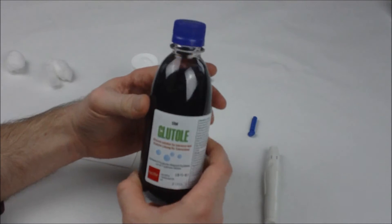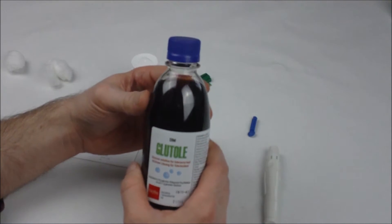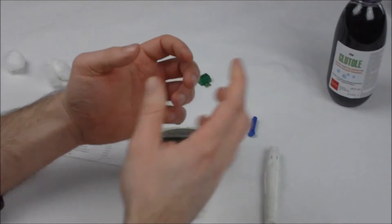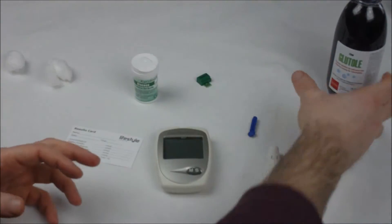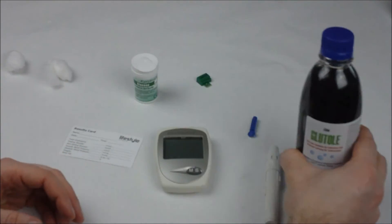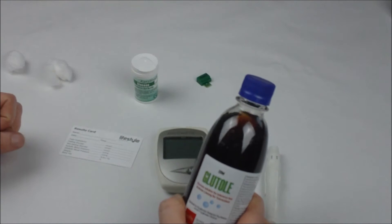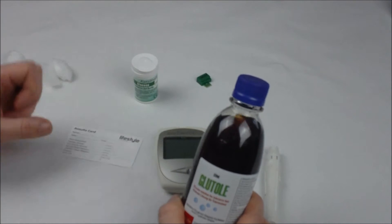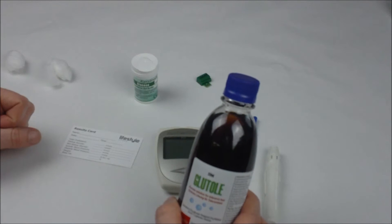So following on from a fasting blood glucose test or following on from fasting conditions you are then going to proceed to drink your glutol. So you need to be in a fasting state before this so it's best to follow this test on after you've measured your fasting glucose level.